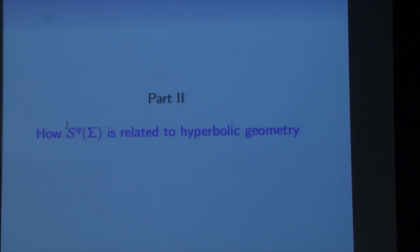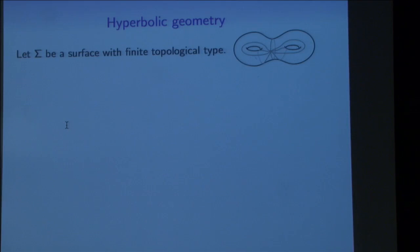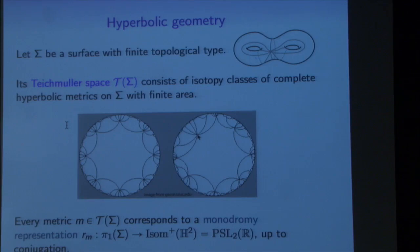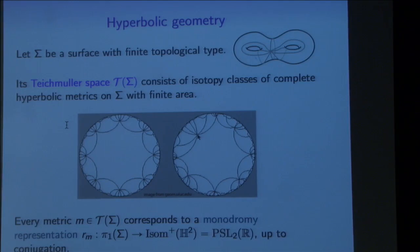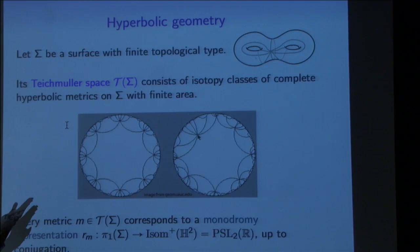Now we're ready for some hyperbolic geometry — it's a little surprising. Suppose I have a surface with finite topological type: oriented, connected, compact, maybe closed, with finitely many punctures. We can consider its Teichmüller space, which consists of all isotopy classes of complete hyperbolic metrics on that surface. For a genus two surface, I can think of it as an octagon glued together, and that octagon can be realized as an octagon in hyperbolic space. Depending on the shape of this octagon, I get different metrics.